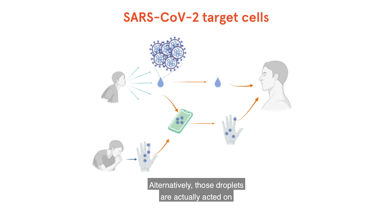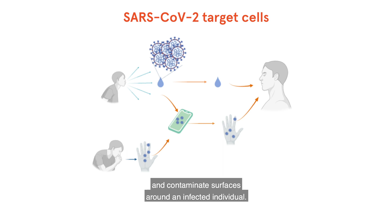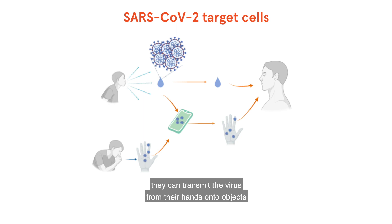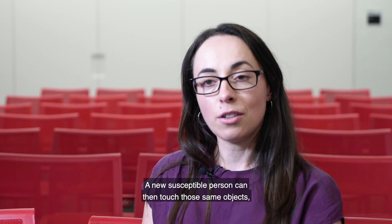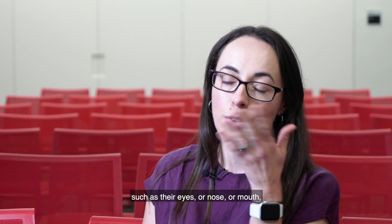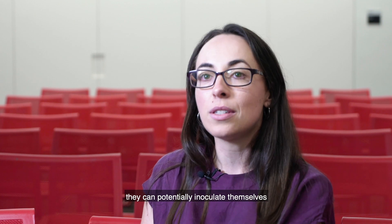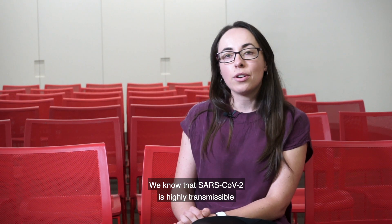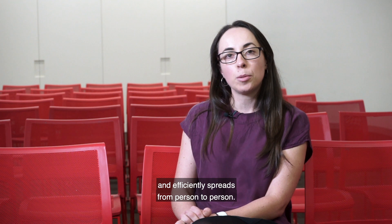Alternatively, if those droplets are acted on by gravity, they will fall out of the air and contaminate surfaces around an infected individual. If an infected individual also doesn't use good respiratory hygiene — such as coughing into their elbow and instead coughs on their hands and doesn't wash them — they can transmit the virus from their hands onto objects that they touch. A new susceptible person can then touch those same contaminated objects, and if they then touch their face — such as their eyes, nose or mouth — they can potentially inoculate themselves with the virus, initiating the infection.